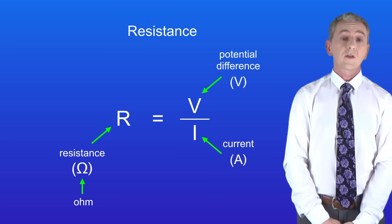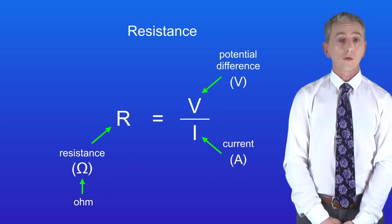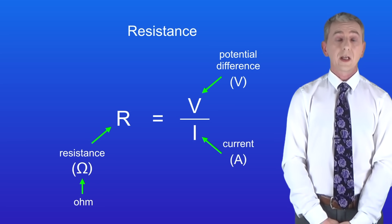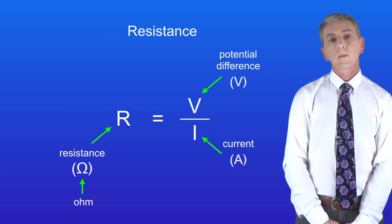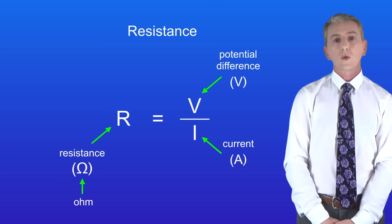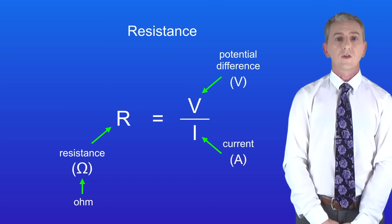Now you might be thinking that resistance is a bad thing. Why would we want to waste energy moving a current through a component? And in some ways you'd be correct. A lot of energy is wasted due to resistance. But sometimes resistance can be really useful. Sometimes we want to add resistance into a circuit and to do that we use a resistor.